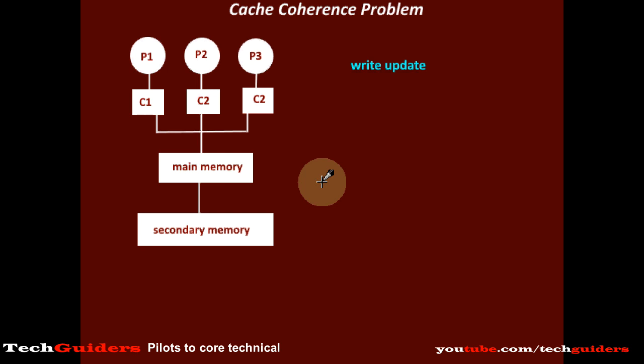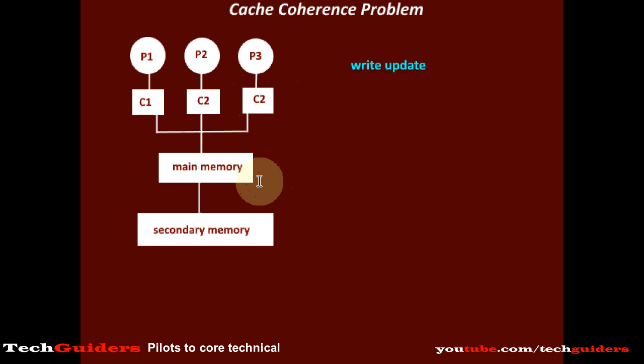Thus, write-through and write-back are the two approaches used to synchronize the cache with the main memory. Next, we will discuss the approaches used to synchronize the local caches within the same level.